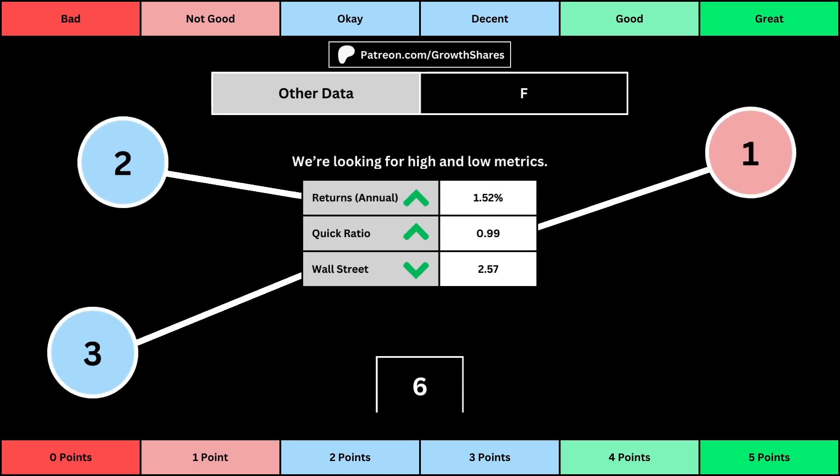The fourth set of metrics looks into other relevant data. First is the stock's performance over a set period of time — usually 10 years, but if the stock doesn't go that far back, we use the earliest data up to 10 years. The quick ratio is basically how easy it is for the business to pay off its short-term obligations.